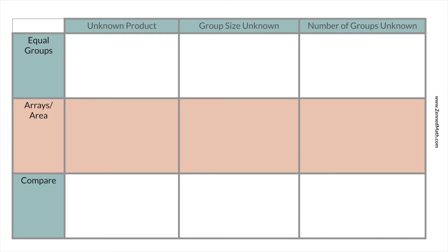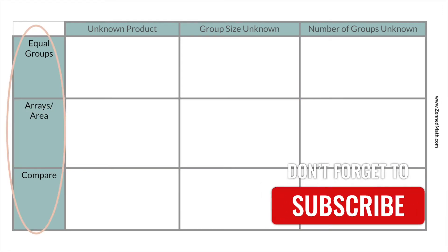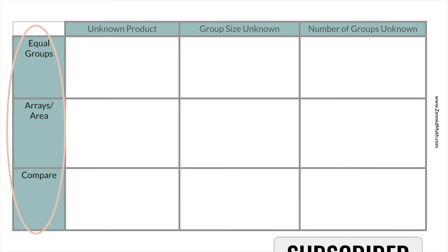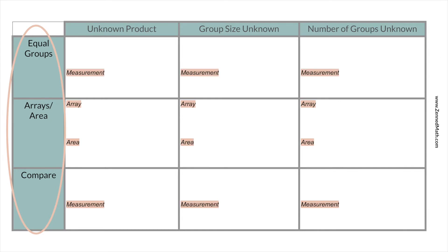This unit probably seems pretty straightforward because it's arrays and area, but there's actually some complexity involved here. Before we get into that, let me give you a little background on the word problem types. These are the three different components of multiplication: equal groups, arrays and area, and comparison. These are actually broken down into even smaller sections.